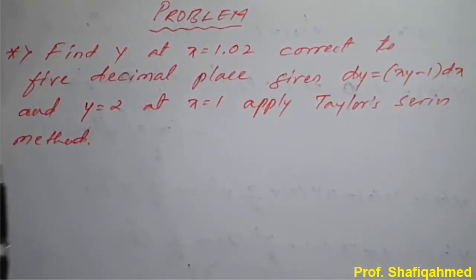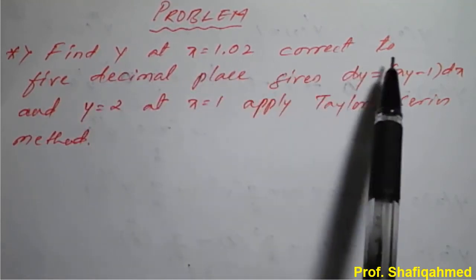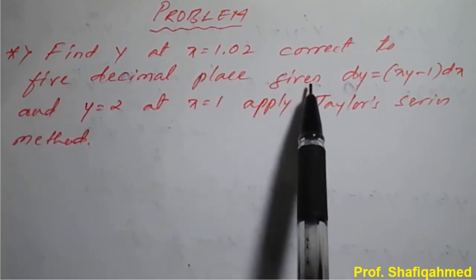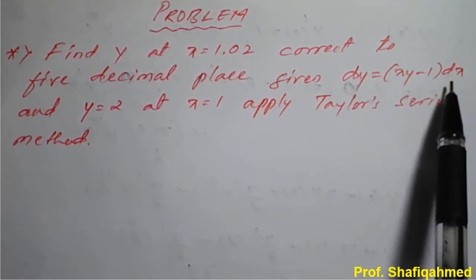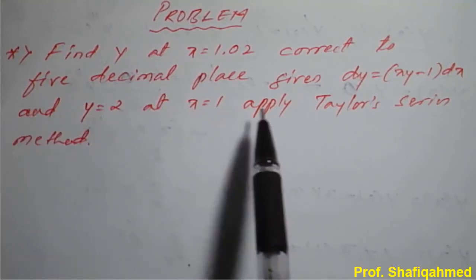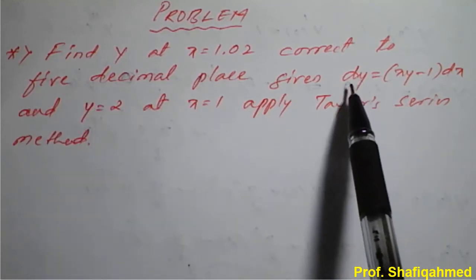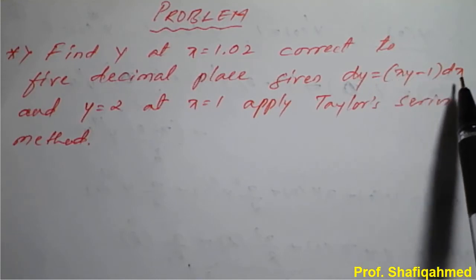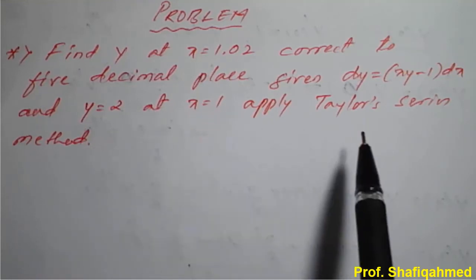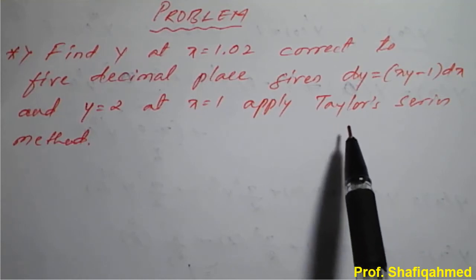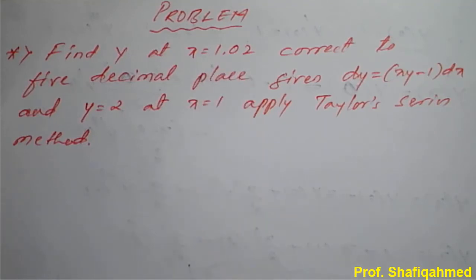Hello students. The problem is: find y at x = 1.02, correct to 5 decimal places, given that dy = (xy - 1)dx and y = 2 at x = 1. Apply Taylor's series method. So reading the question, the equation is dy = (xy - 1)dx with initial condition y = 2 at x = 1. We need to apply x = 1.02.